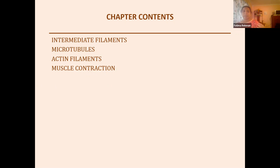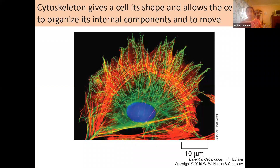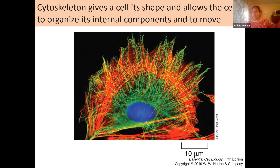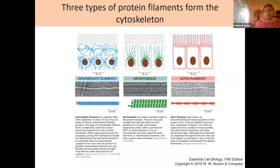The cytoskeleton gives our cell its shape, and it also allows cells to communicate internally — moving molecules from one part of the cell to another, and also to the outside. Especially internally, this is like our road network inside the cell, allowing things to be transported from one part to another. There are three main types of protein filaments that form our cytoskeletal structures.